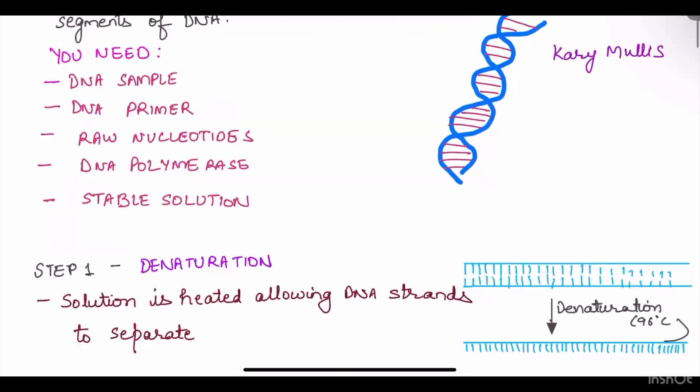For PCR we need DNA sample, DNA primer, short stretch of single-stranded DNA complementary to the 3' end of sense and antisense strands, and raw nucleotides. These provide energy for polymerization and are building blocks for the synthesis of DNA.